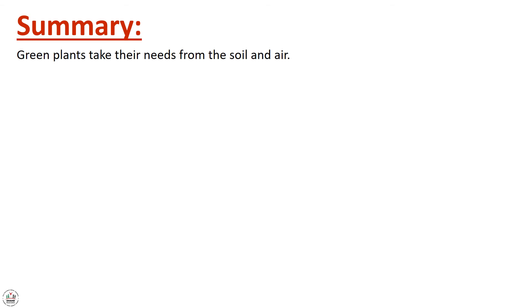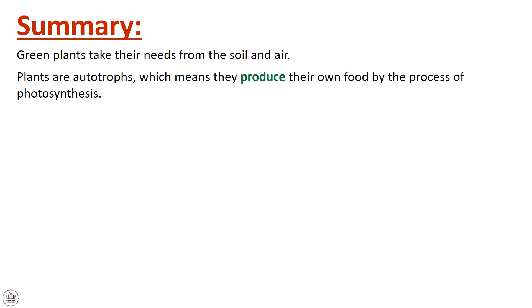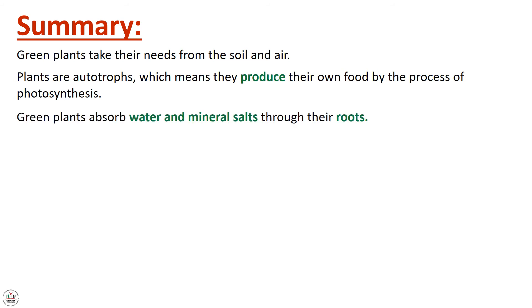Now let's make a summary. We talked about that green plants take their needs from the soil and air. Also, plants are autotrophs, which means they produce their own food by the process of photosynthesis. Also, green plants absorb water and minerals through their roots.